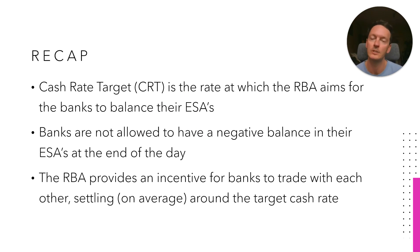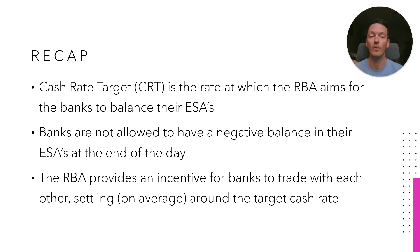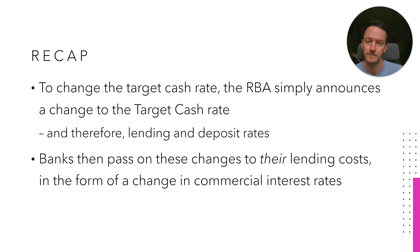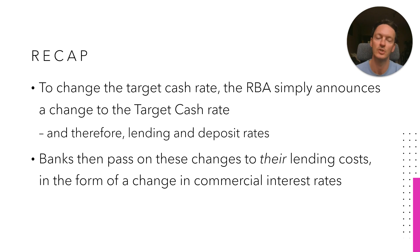Quick recap: the cash rate target is the rate at which the Reserve Bank aims for the banks to balance their ESAs — they're not allowed to have a negative balance, they can't go to the next day with a deficit of funds in their exchange settlement accounts. The Reserve Bank provides an incentive on both sides for banks that have too much or not enough money, encouraging them to exchange with each other, which settles on average close to the cash rate target. To change the target, the Reserve Bank simply announces a change — say, drop by 25 basis points — and then the lending and deposit rates, and the price at which banks exchange with each other, change accordingly.